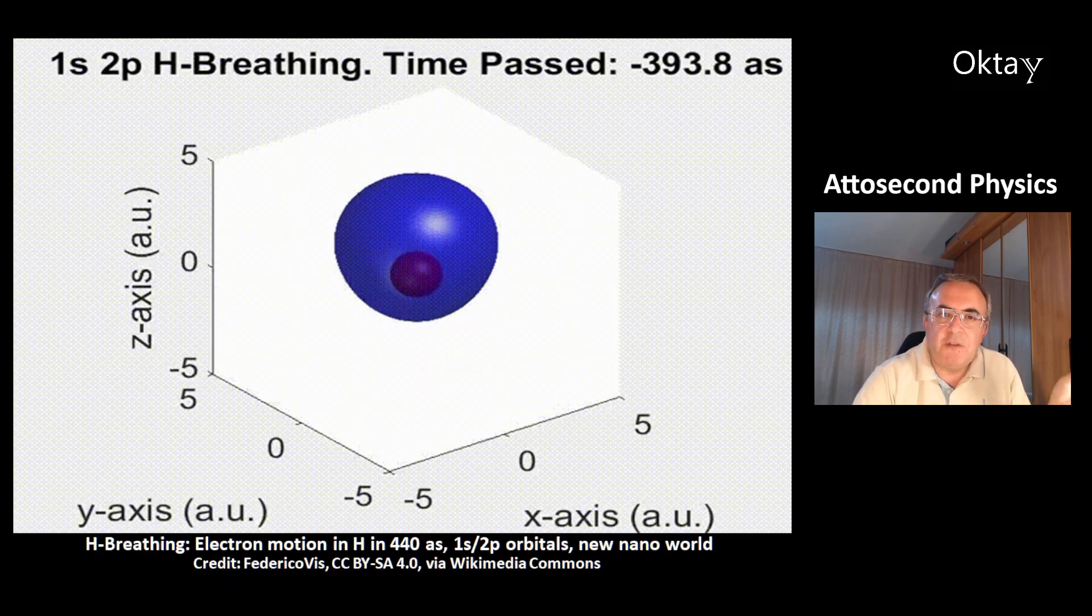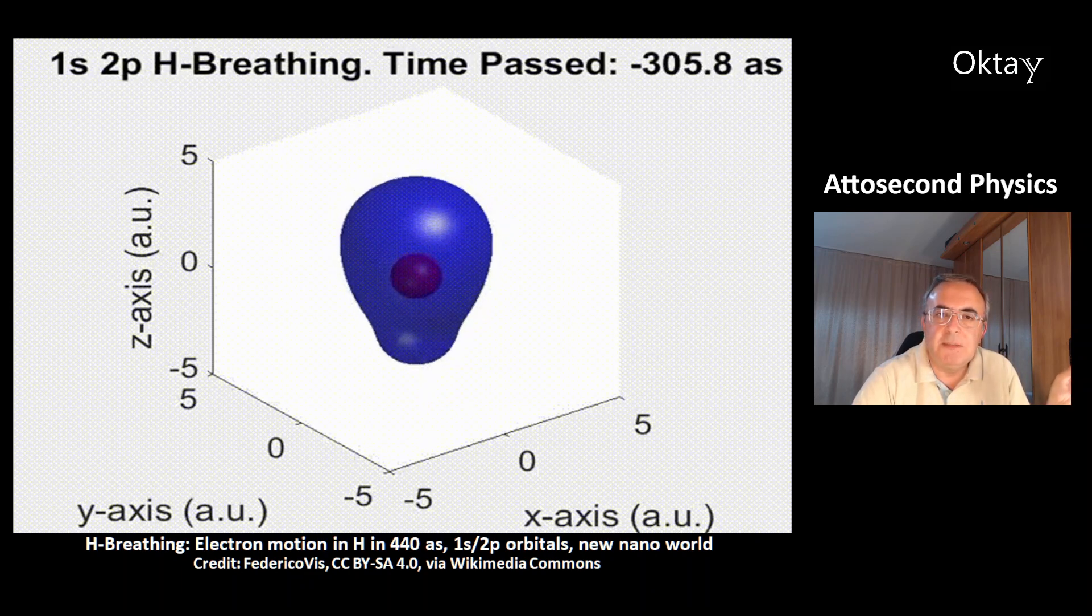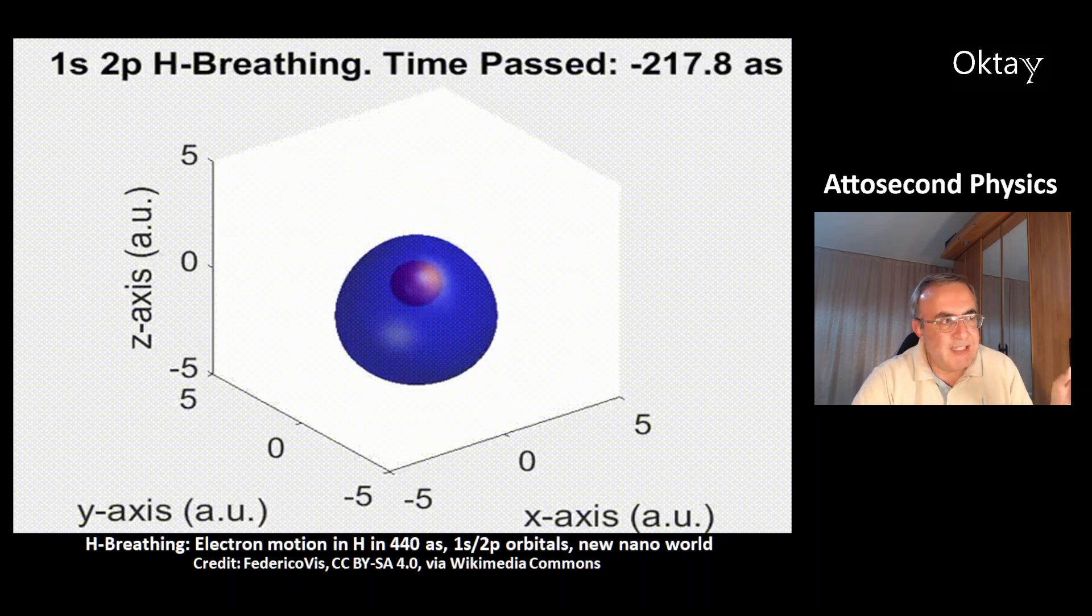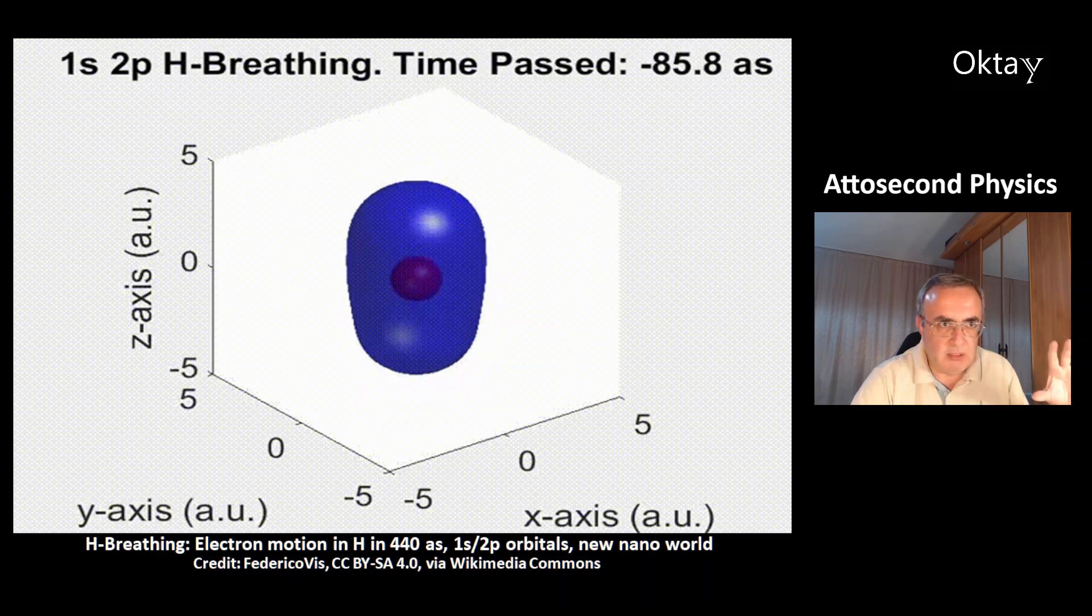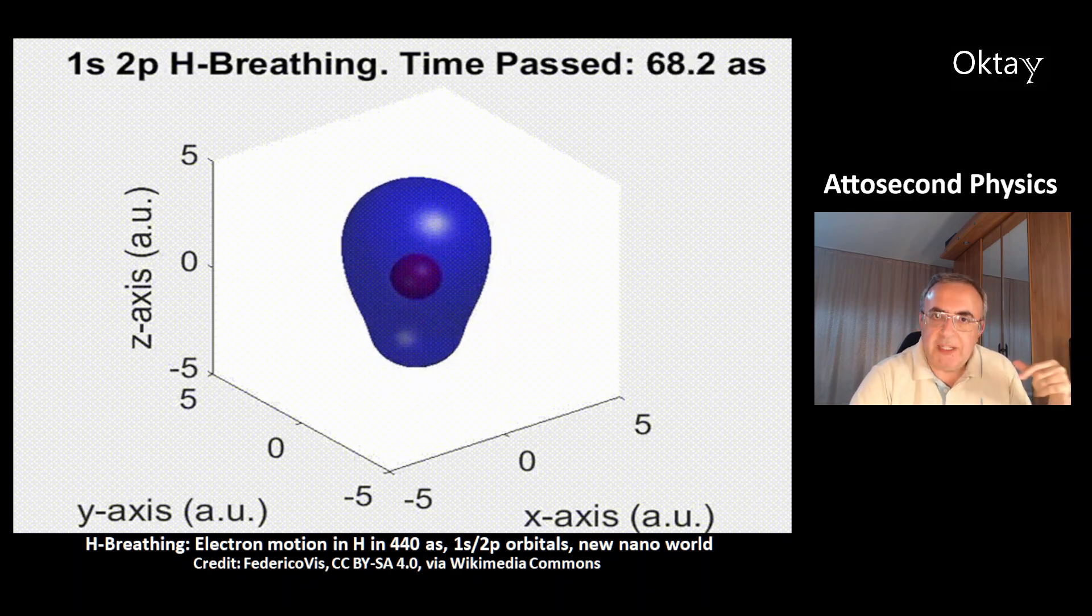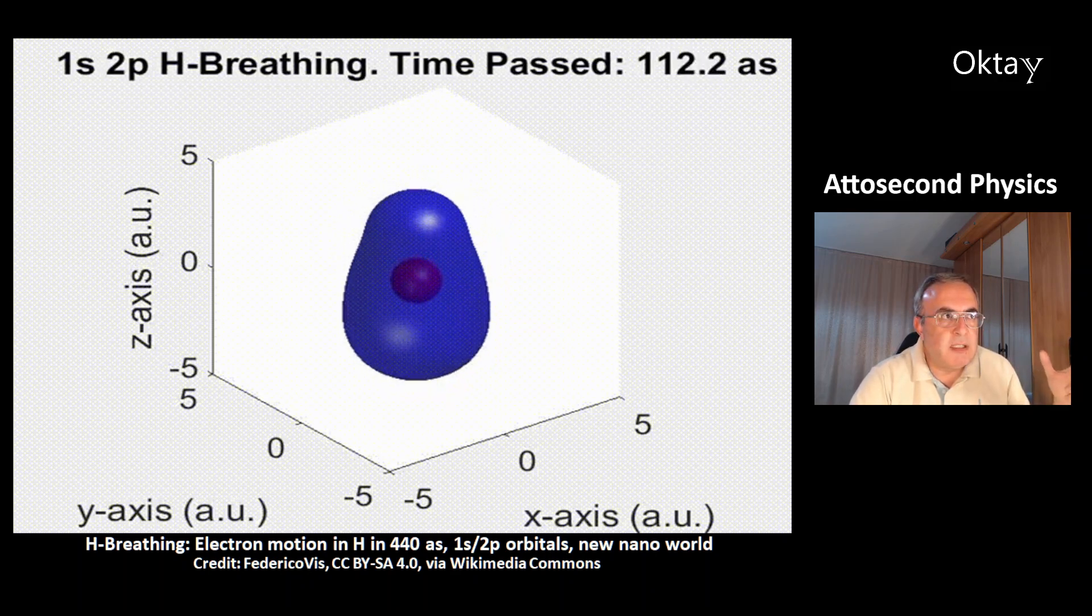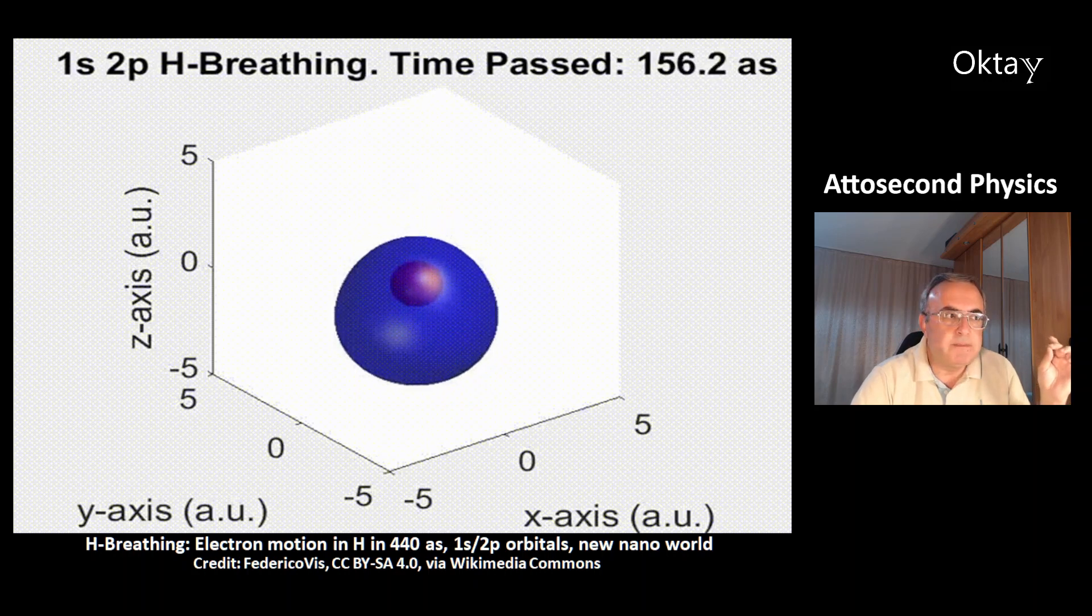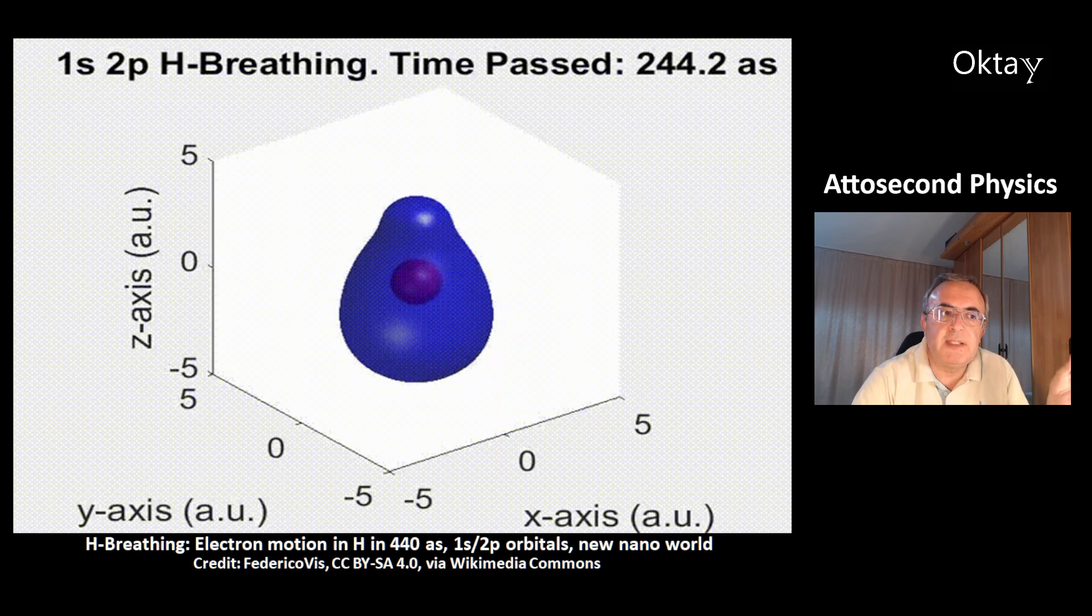This is a picture of hydrogen breathing. You can see the three axes of space: X, Y, Z. That's the electron motion from the spherical 1s orbital to the dumbbell-shaped 2p orbital. The 2p orbital is in this picture blue and black over time. This is a movie of the electron motion within 440 attoseconds.